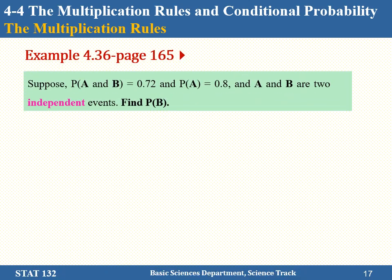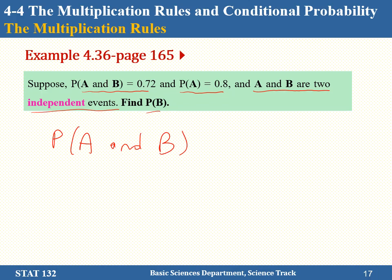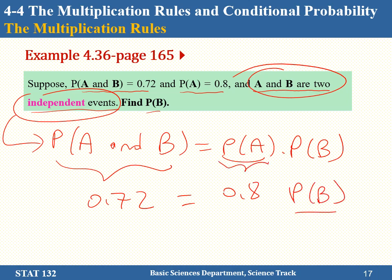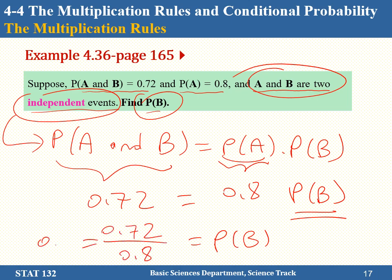Now the multiplication rule continued. Given P(A and B) = 0.72 and P(A) = 0.8, where A and B are independent events — find P(B). Since they're independent, P(A and B) = P(A) × P(B). So P(B) = P(A and B) / P(A) = 0.72 / 0.8 = 0.9.